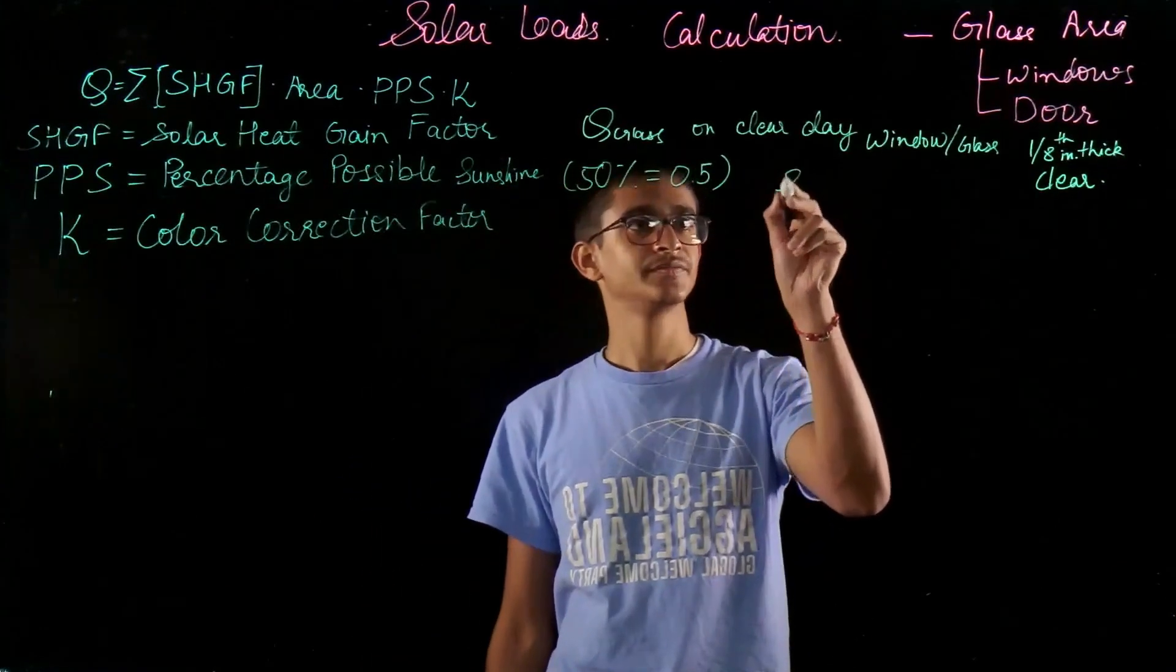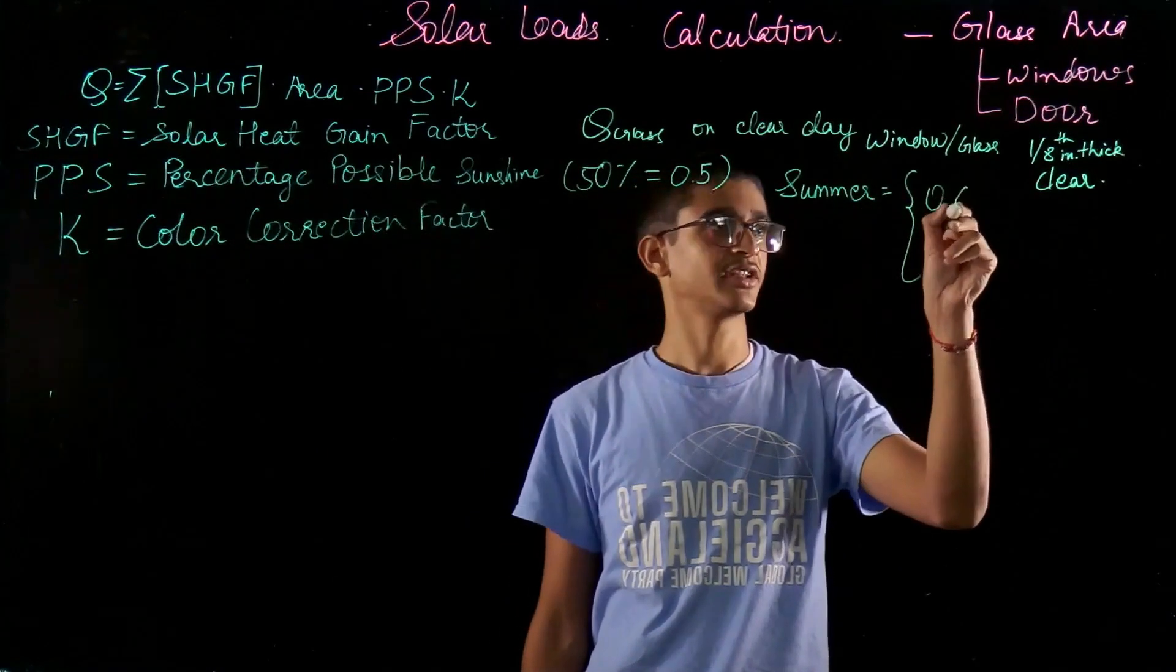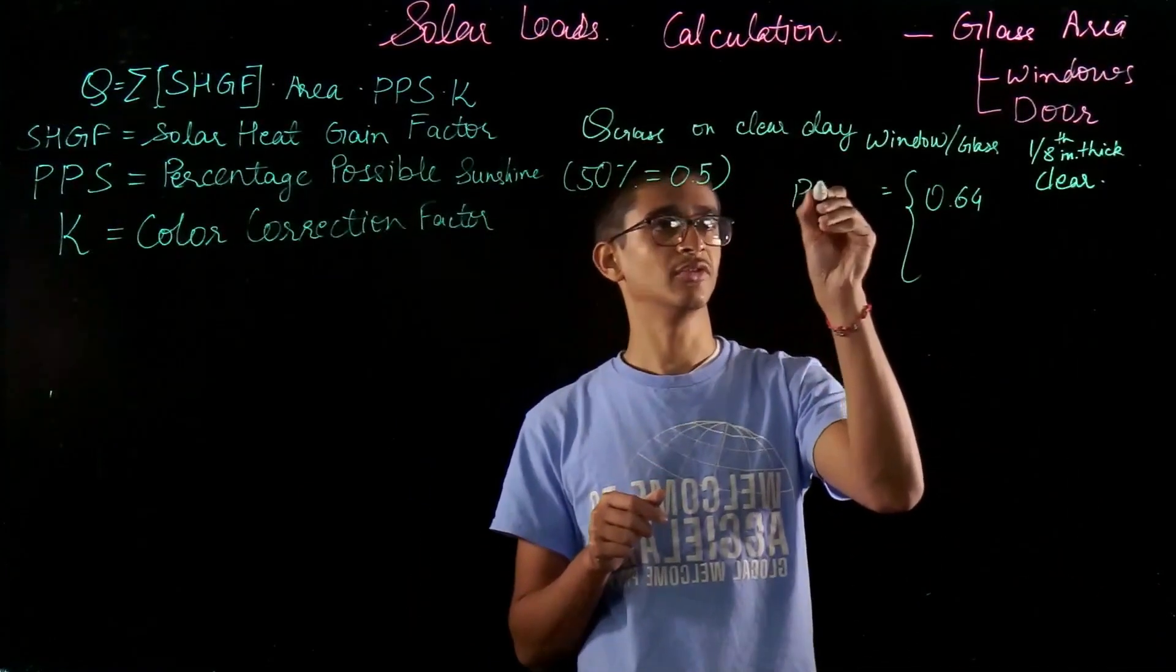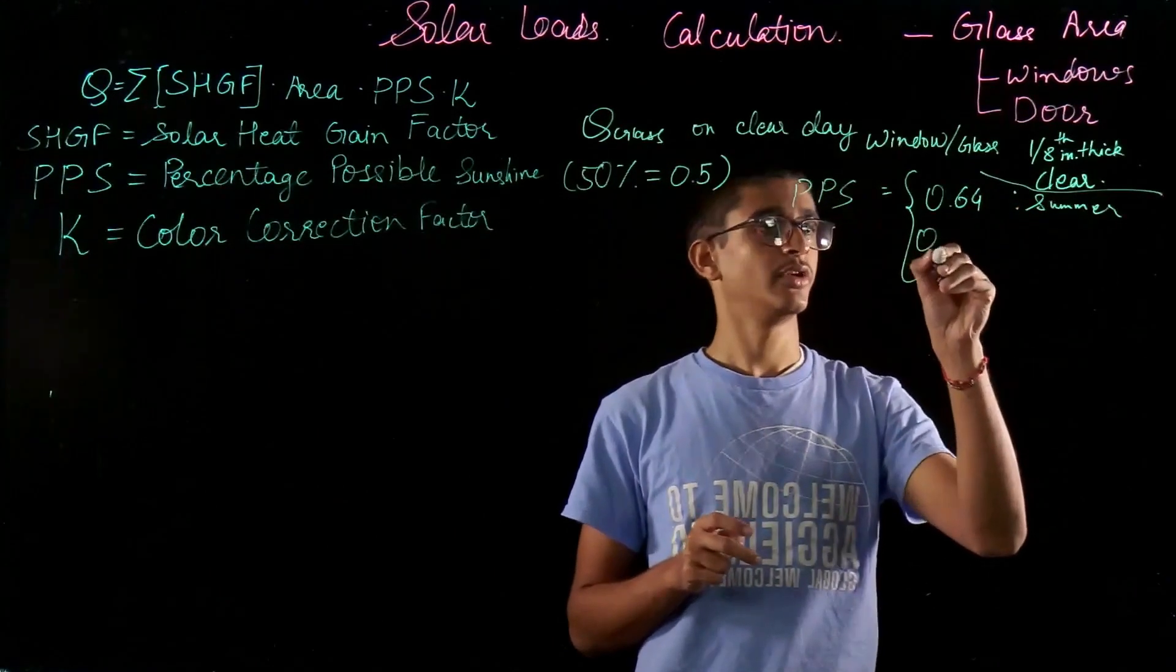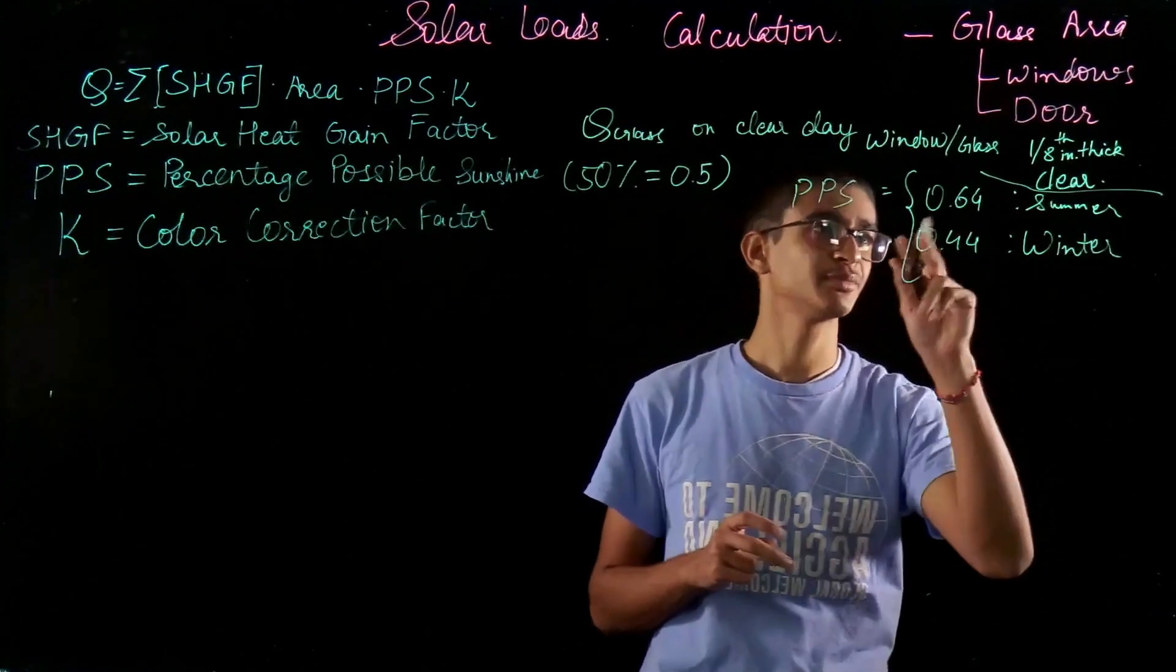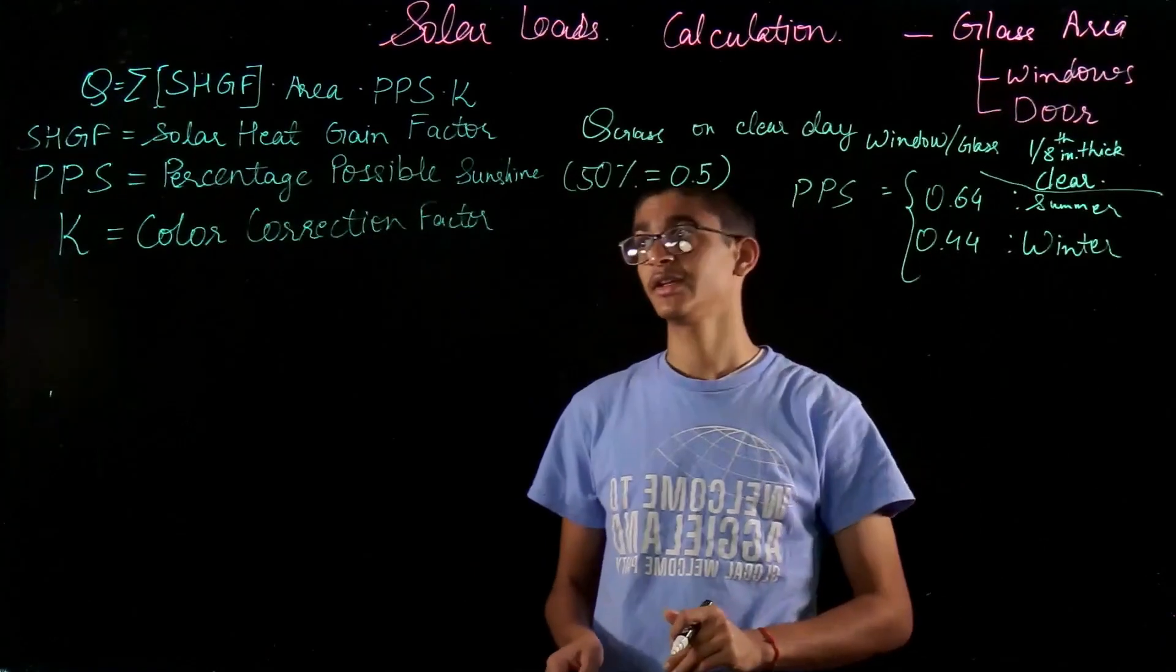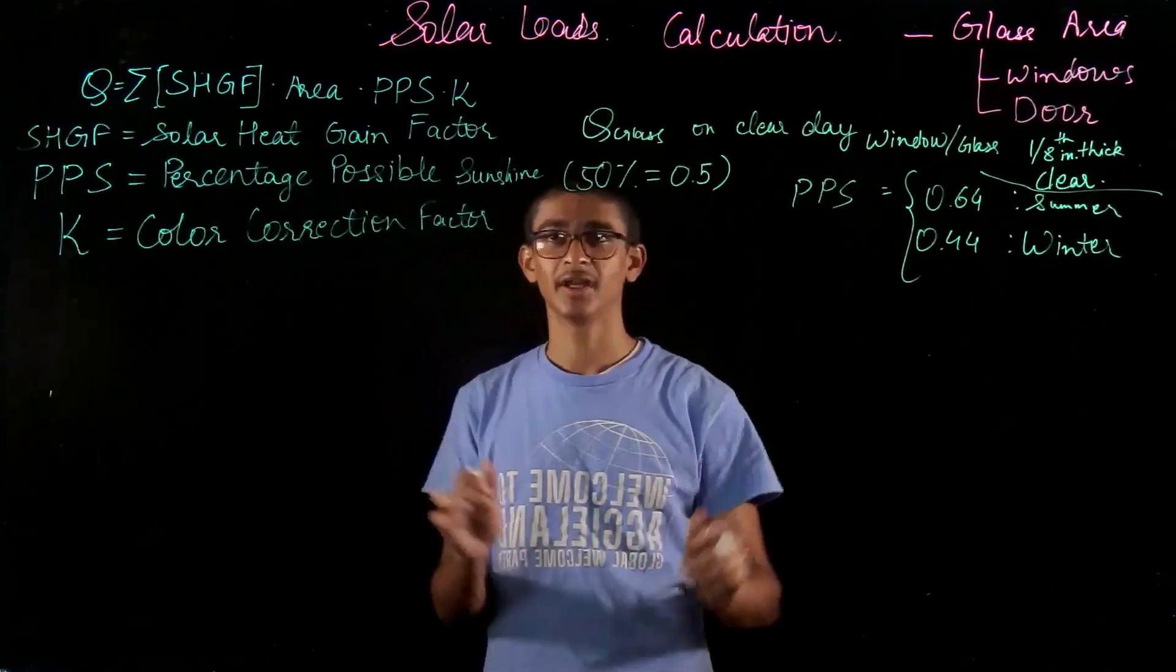For summer, usually my PPS is taken to be 0.64. For winters, 0.44. So six months we'll have an approximate PPS value average to be 0.64, and the other six months roaming around winter season will take a PPS average value of 0.44. This can change based on location. These are the general values.